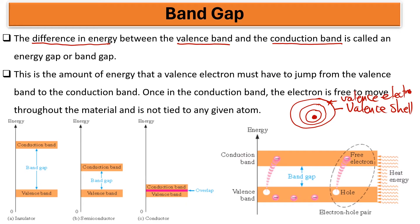We are going to look at that behavior for insulator, semiconductor, and conductor. We are saying this is the amount of energy that a valence electron must have to jump from the valence band to the conduction band.